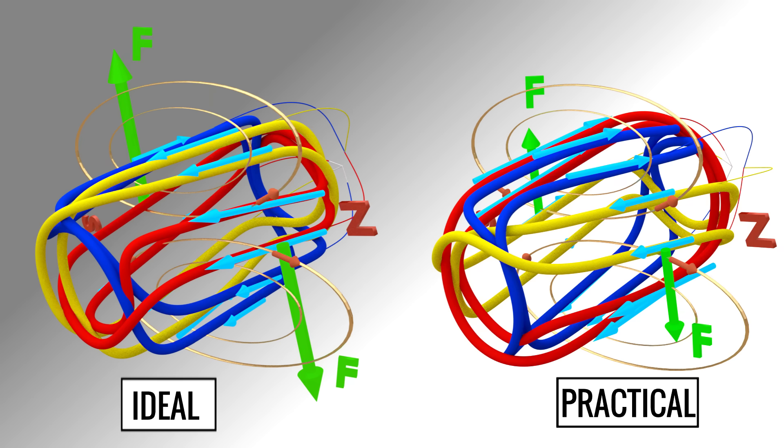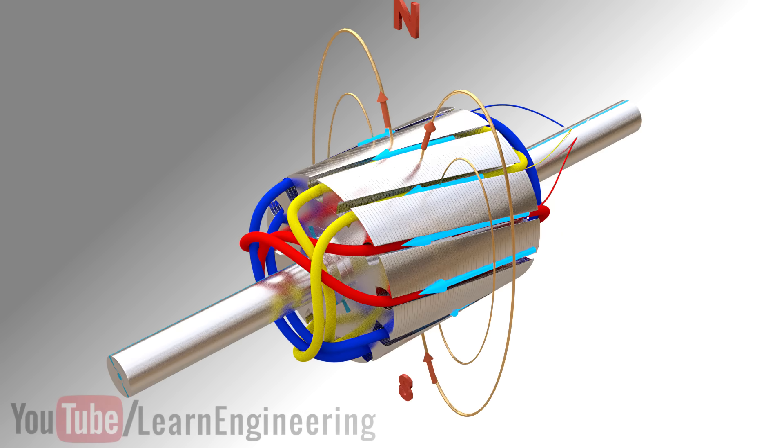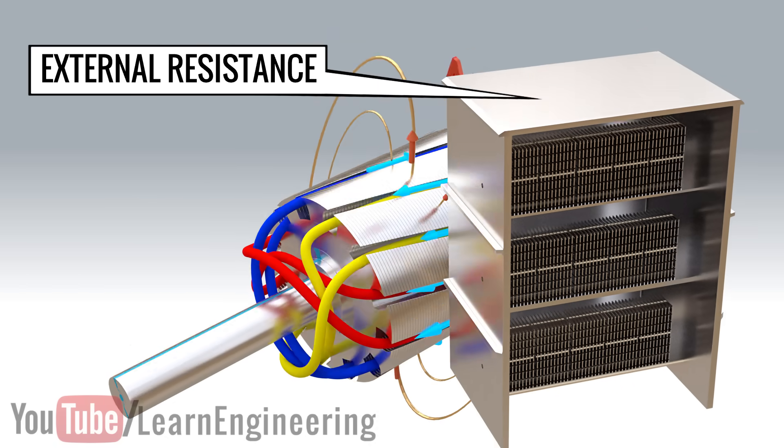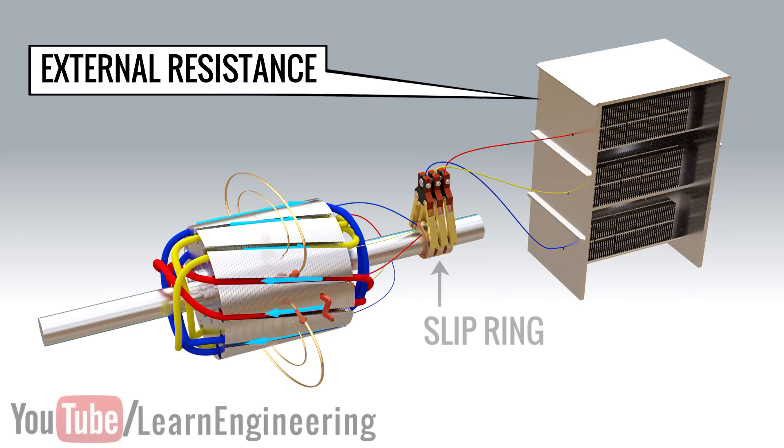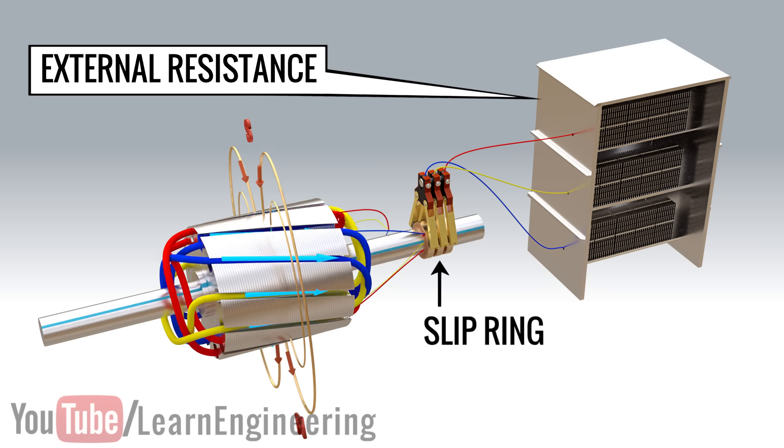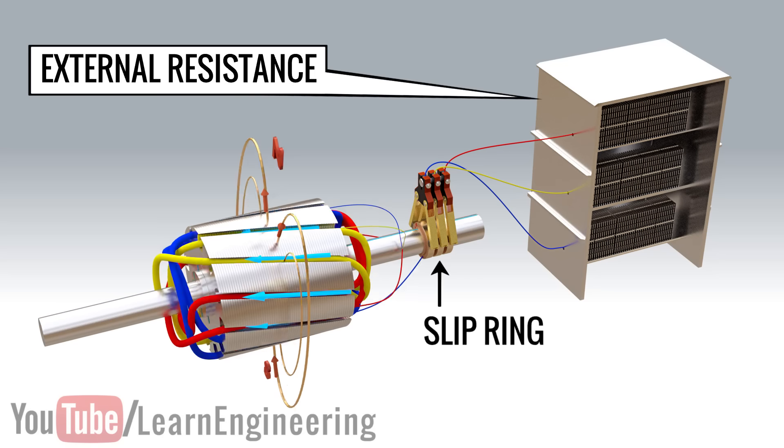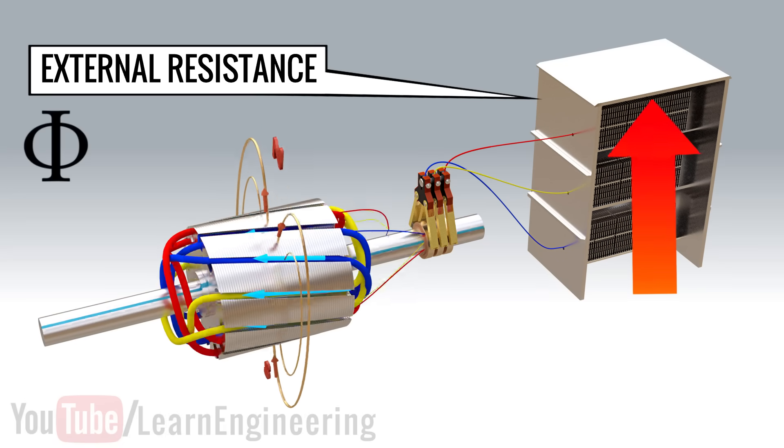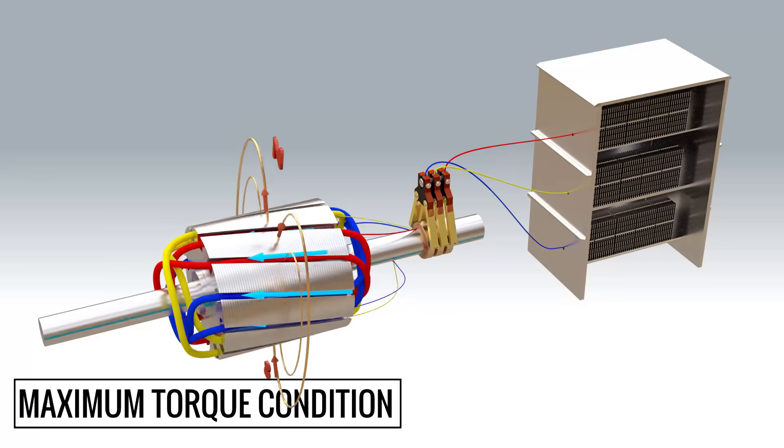In the slip ring induction motor, there is an option to reduce this EMF current phase difference by use of external resistance. The other ends of the coils are connected to an external resistance via the slip rings. We saw in the simple circuit that by increasing the resistance value, we can decrease the phase difference. As a slip ring induction motor starts, the external resistance value is increased. This reduces the phase difference angle and the current induced approaches the maximum torque condition.